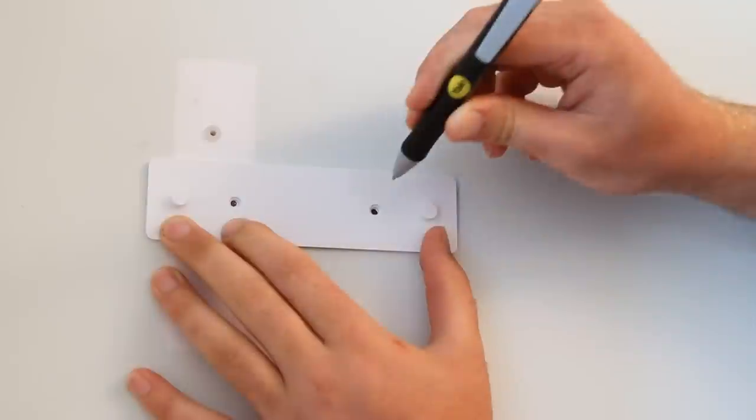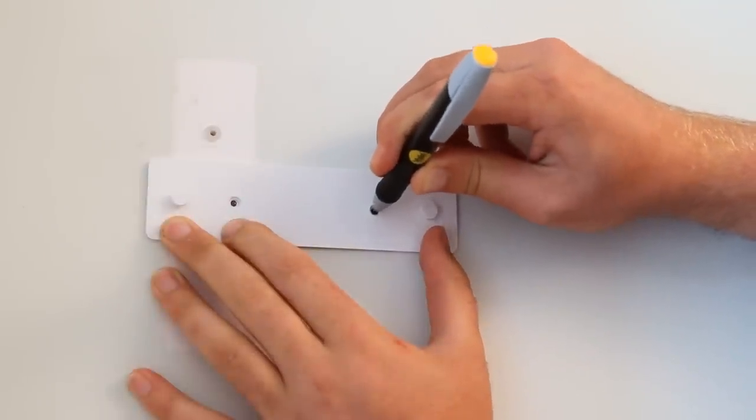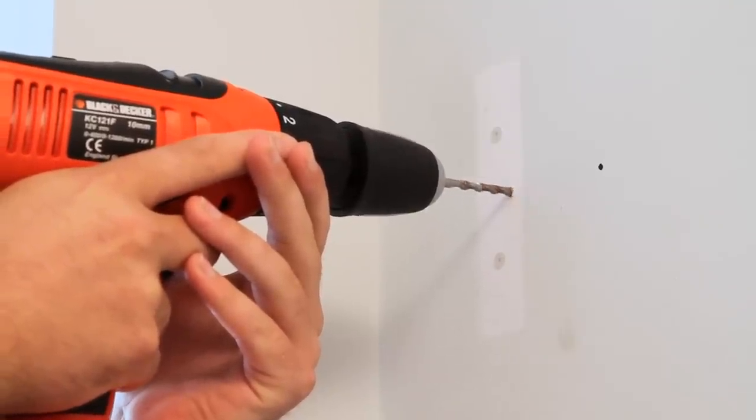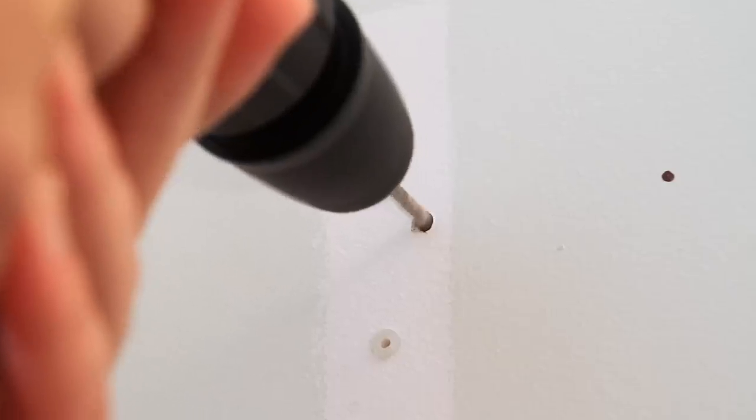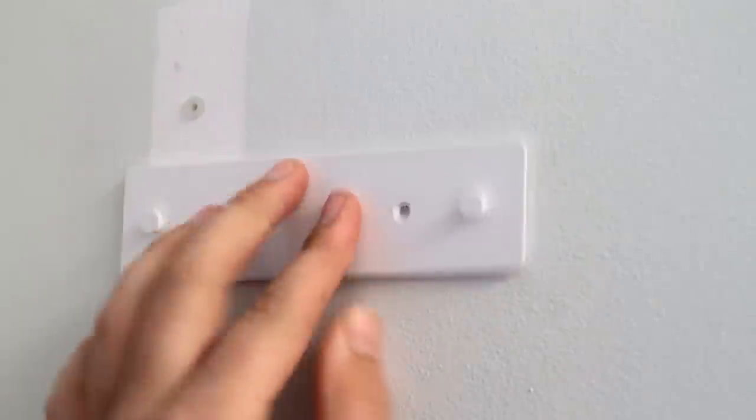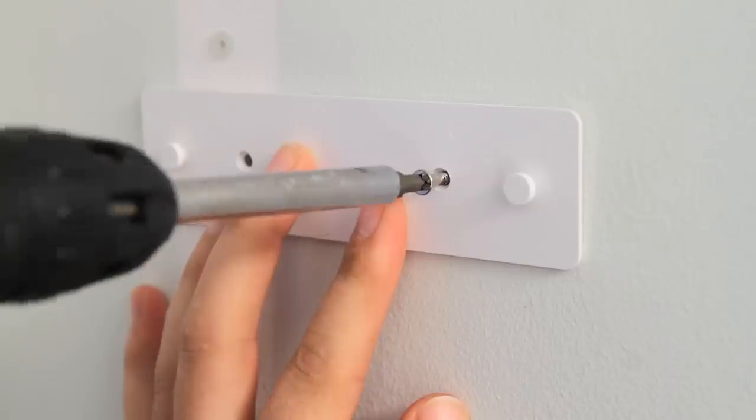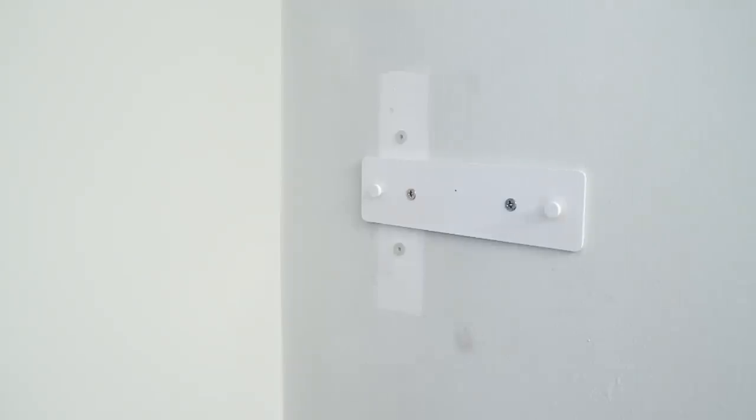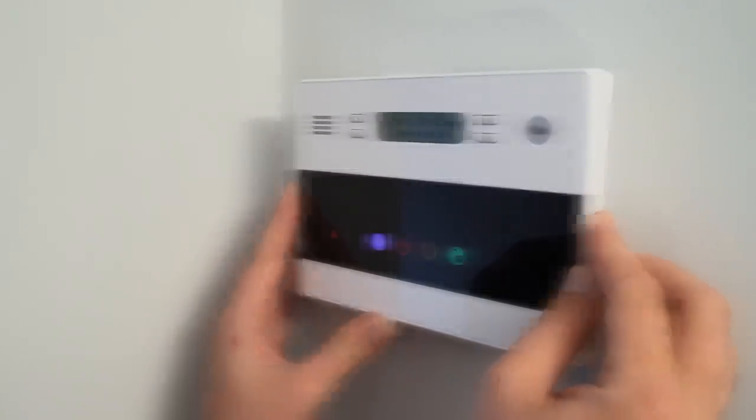Using the two holes on the mounting plate as your guide, mark the wall where you want to position the control panel. Drill the two marked points on the wall and insert the roll plugs provided. Line up the mounting plate with the drilled holes and secure into place with screws provided. Hook the control panel onto the plate and ensure it is fixed securely.